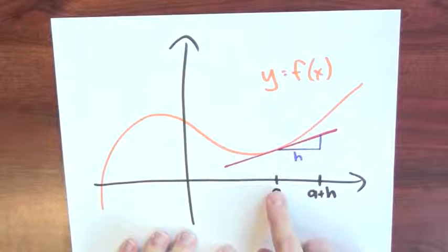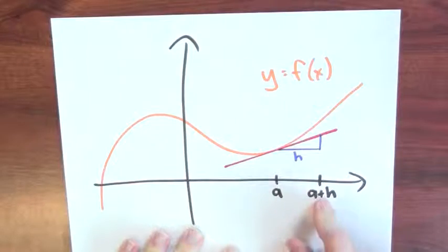Now, I want to know how is the output to f affected when the input moves from a to a plus h. I want to know what happens when I wiggle the input over by adding h. Let me zoom in on this picture just a little bit.